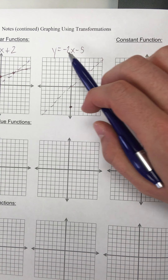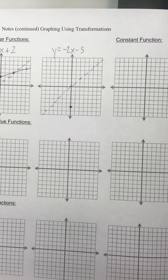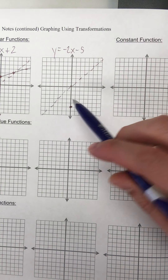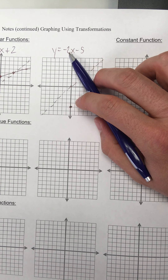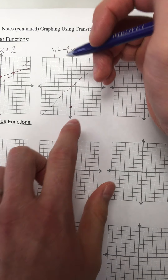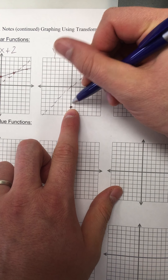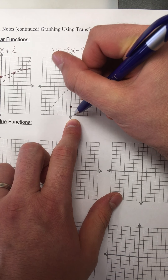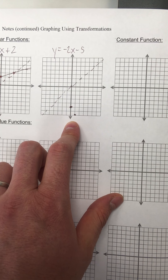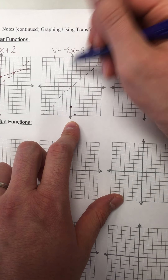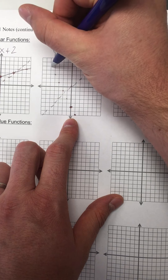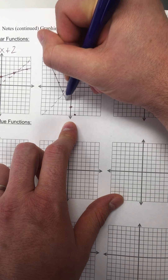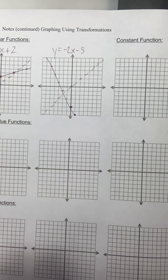Two things are happening here. I have a negative in the front of the equation — that's going to flip it, an x-axis reflection, so instead of going this way, it's going to go in this direction. And I have a two — that's going to be a vertical stretch, making it twice as steep. So instead of going up one over one, I'm going to go down two over one, down two to the right one. You always go to the right first. I can also go up two to the left one. Here is my final answer — there's my linear function.